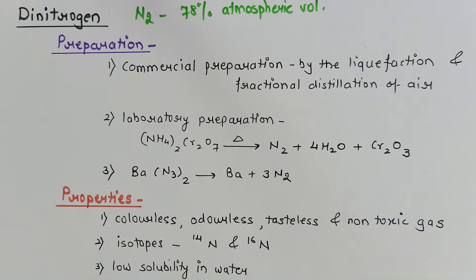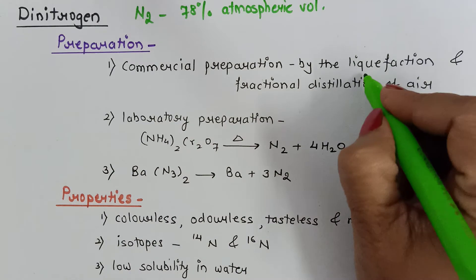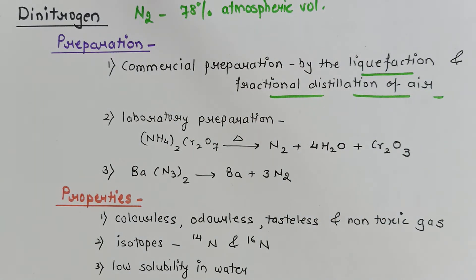We can prepare dinitrogen by various methods. The commercial method is by the liquefaction and fractional distillation of air, where liquid nitrogen is distilled out first. But if you want to prepare dinitrogen in the laboratory, then we have various methods.